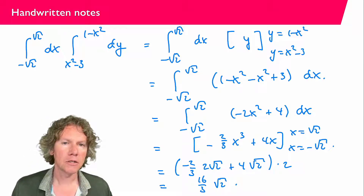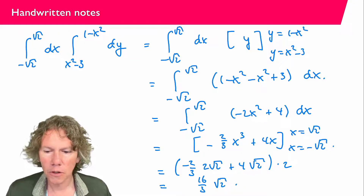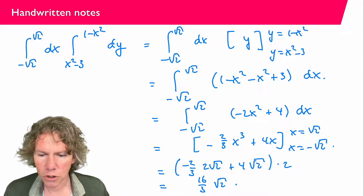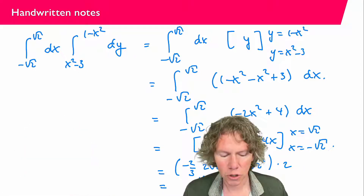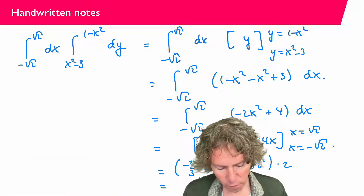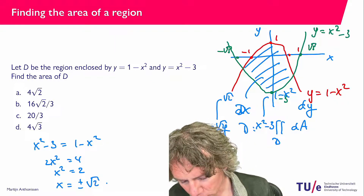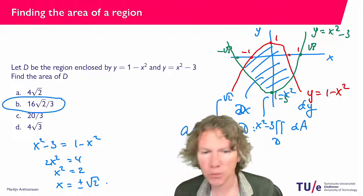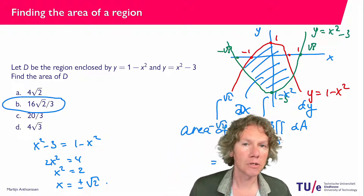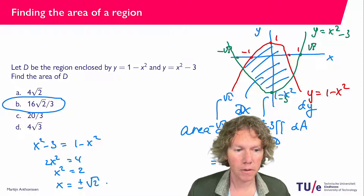So the area of D is 16 over 3 times square root of 2. Let us check whether this is one of the options in the question — and indeed, 16 over 3 root 2 is option B. That is the answer to this question. Thanks for watching and I'll see you in the next video.